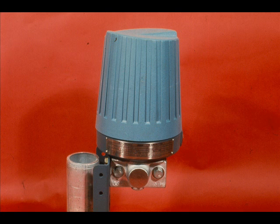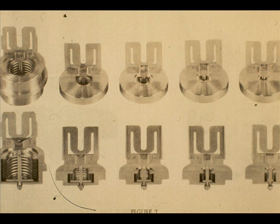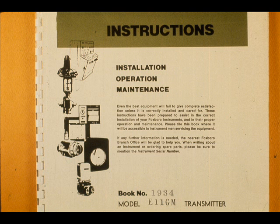We will next change the range and calibrate a Foxborough E11GM pressure transmitter. The procedure will be very similar to that used for the E13 differential pressure transmitter. The pressure transmitter range can be changed to any value within the limits of the capsule. Consult the instruction manual for specific capsule limitations.